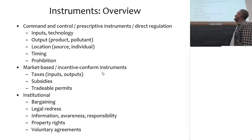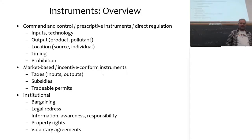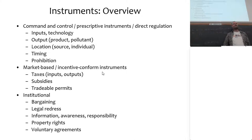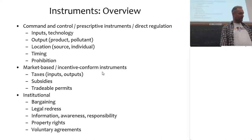What sort of instruments are we going to look at? This week I'll cover command and control instruments — also called prescriptive instruments or direct regulation, it's all the same thing — and institutional instruments, which in economics is really just our word for miscellaneous or 'other.' I'll talk about voluntary agreements, property rights, and a little bit about information and awareness.